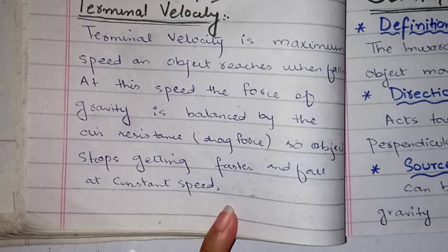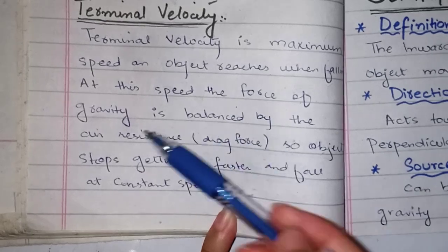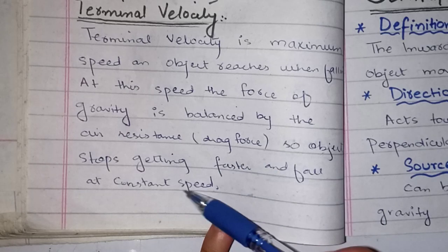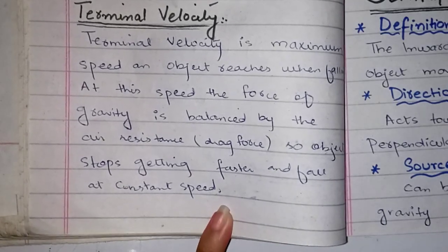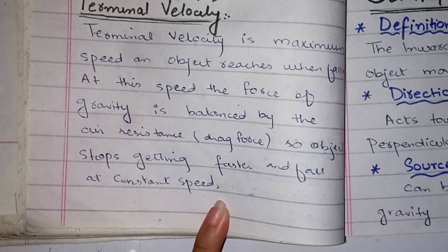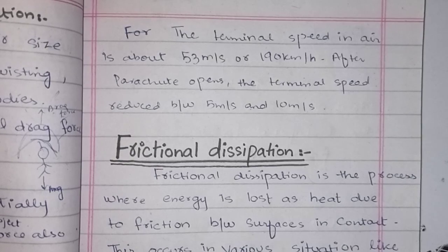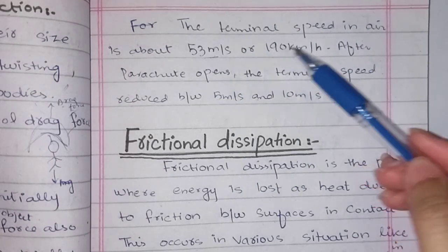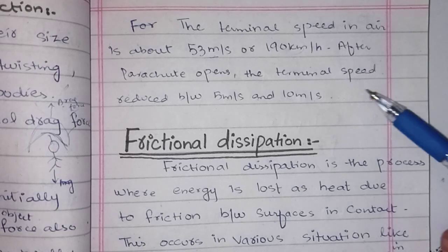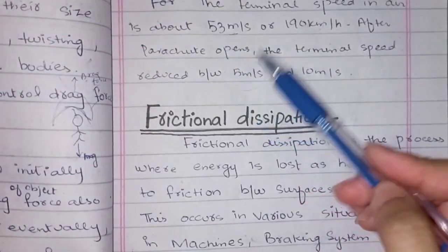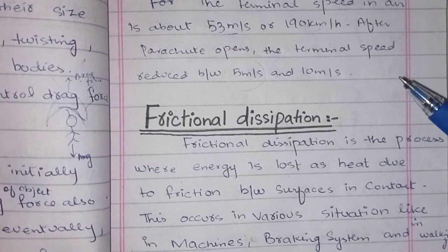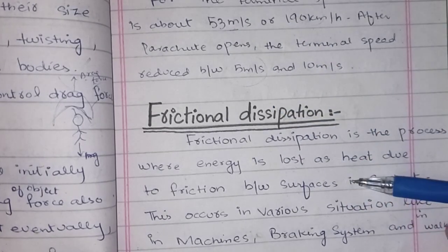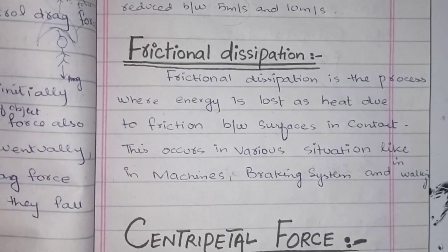Terminal velocity is the maximum speed an object reaches when falling, at which the force of gravity is balanced by air resistance. When the parachute opens, the drag force increases significantly. The object stops getting faster and falls at a constant speed. According to the book, the terminal speed in air is about 53 meters per second, which is roughly 190 kilometers per hour. After the parachute opens, the terminal speed is greatly reduced, showing how much friction dissipation occurs.